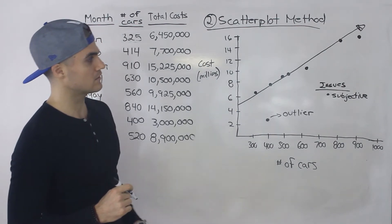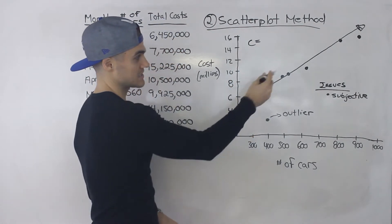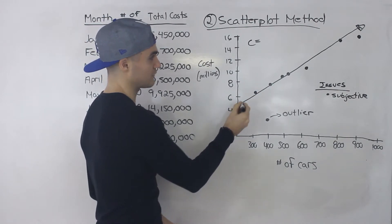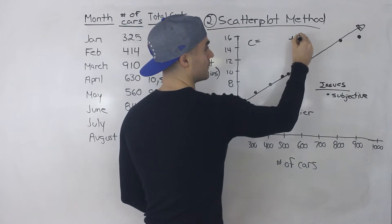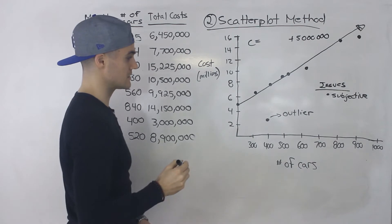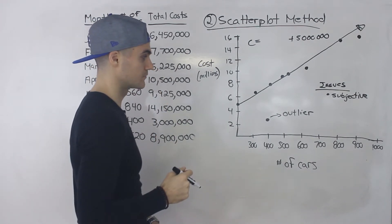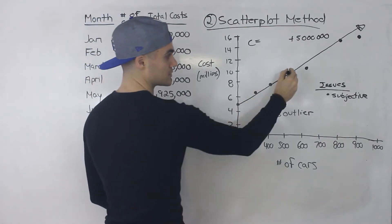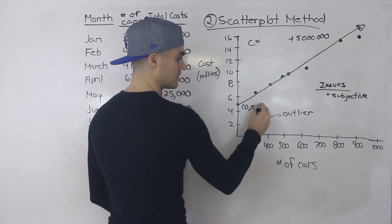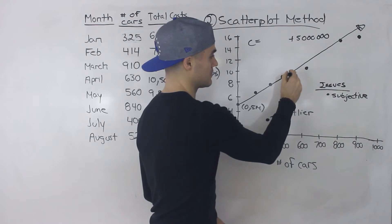And so from here if you want to get an equation you would basically just estimate the slope. So you can maybe take you could start with the b value so this would be like five million. Right so we know that that's going to be the fixed cost. We're estimating there. And then what you can do is you can maybe pick two points. So we could pick this point which is zero and five million. And you could pick another point on the line. So maybe this point here.